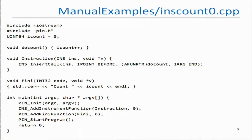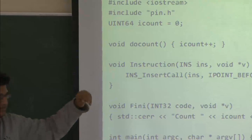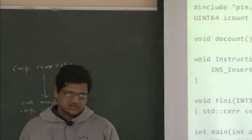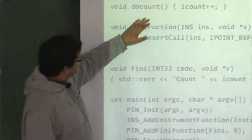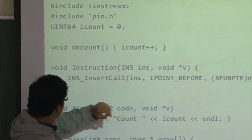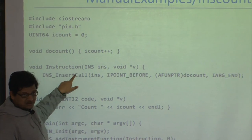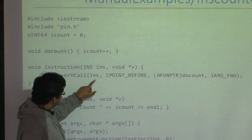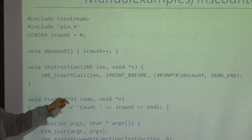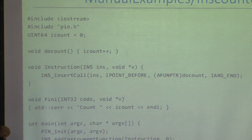This is the code for the INSCount PIN tool — a simple C++ application. It includes the pin.h header file for PIN API functions, defines a 64-bit integer counter initialized to zero, and has a doCount function that increments the counter by one whenever called. Then there is an 'instruction' function that calls the INS_InsertCall PIN API function, with the third argument being a pointer to doCount.